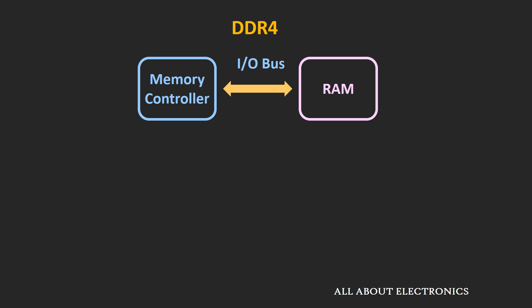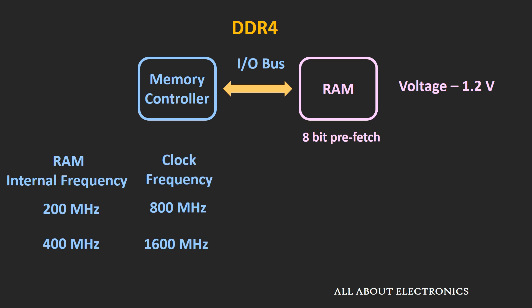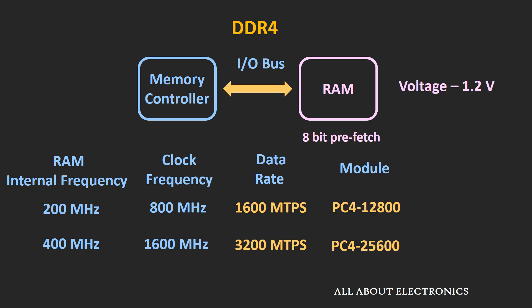The next generation is DDR4 RAM, which reduces operating voltage from 1.5V to 1.2V. The prefetch remains 8 bits per cycle, but the internal clock frequency is increased. At 400 MHz internal clock, the IO bus runs at 4× = 1600 MHz, and the transfer rate is 3200 MT/s. On a DDR4 module, you will find PC4-25600, indicating 25600 MB/s, and in DDR terminology it is written as DDR4-3200.